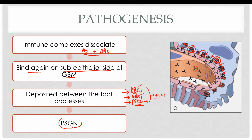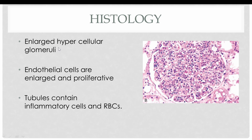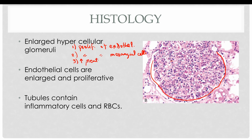All these factors lead to the development of post-streptococcal glomerulonephritis. Histologically, the glomeruli typically appear as hypercellular due to proliferation of glomerular endothelium and mesangial cells, along with increased neutrophils and other inflammatory cells. The endothelial cells are enlarged and proliferative, which decreases the size of fenestrations in the capillary walls, resulting in a decreased glomerular filtration rate.